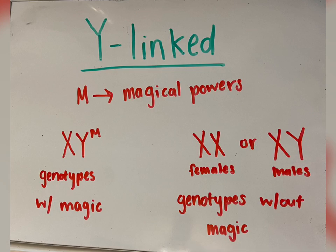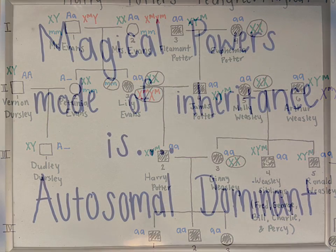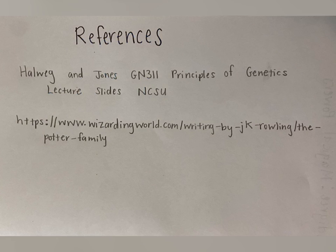Finally, Y-linked traits are passed on the Y chromosome and spread from father to son. This mode of inheritance would not be possible for this gene because females are present throughout the pedigree with this gene — for example, individual 2-3. Therefore, the only mode of inheritance consistent with the magical powers gene is autosomal recessive. If only my parents had this gene. Here are a list of my references. Thanks for watching.